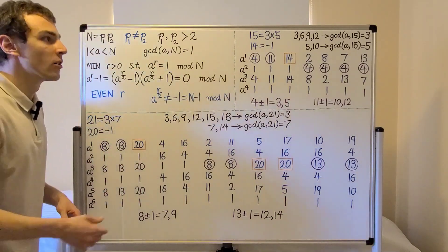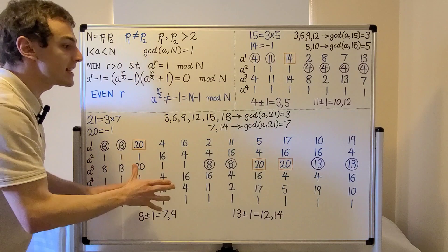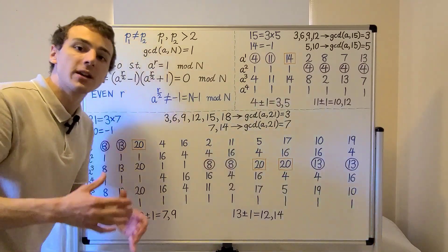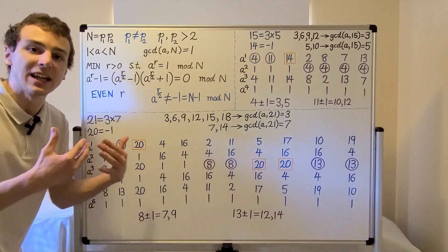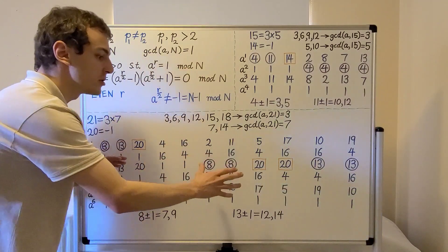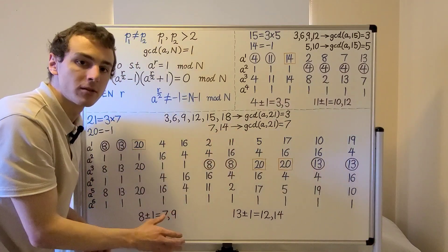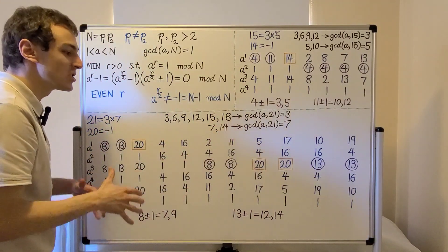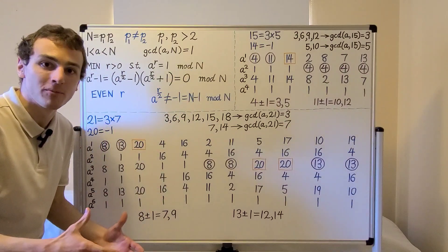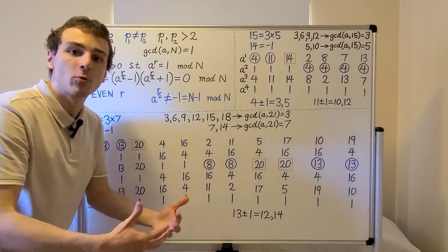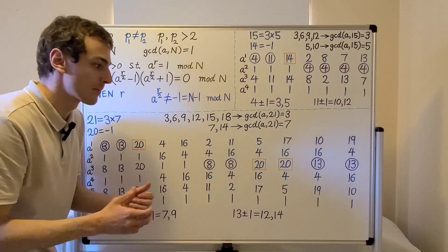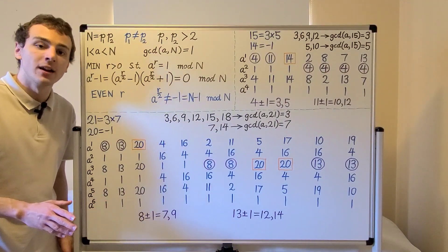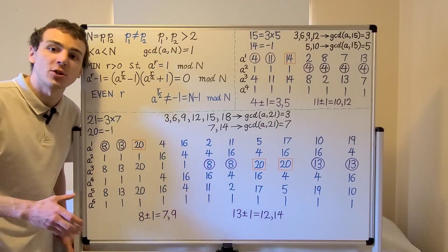We've analyzed all possibilities for choosing a guess a mod 21, illustrating how Shor's factoring algorithm works for 15 and 21 — the number theory part. In the next videos, we'll construct quantum circuit diagrams for order finding. For small values it's easy to compute the order by hand, but for large practical values of n this cannot be done efficiently on a classical computer, which is why quantum algorithms for order finding are needed.